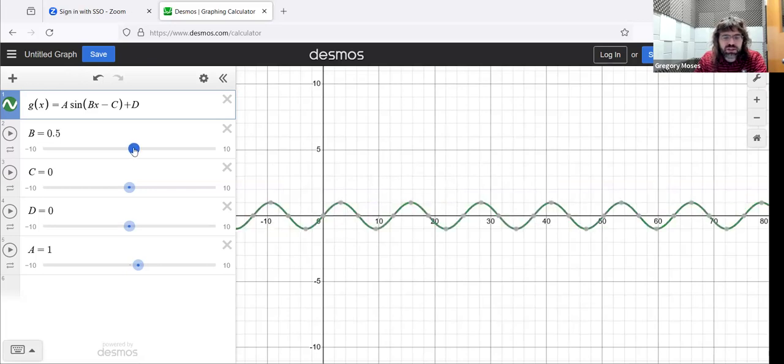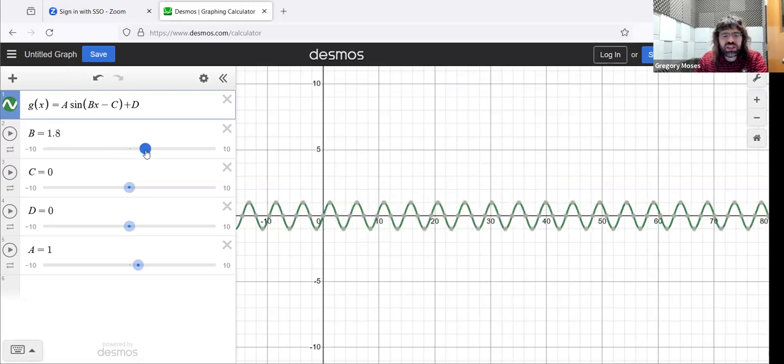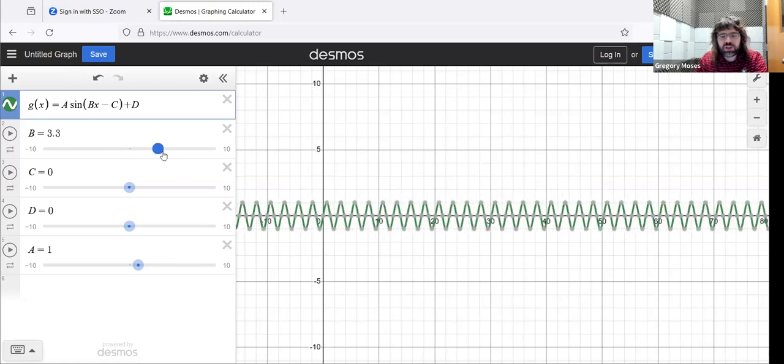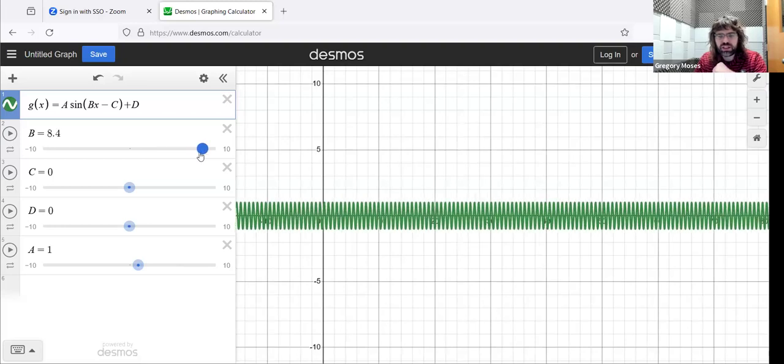As B gets bigger, the period shrinks. So now a period starting here only has to reach this value before it starts to repeat. So the bigger B is, the smaller the period is.